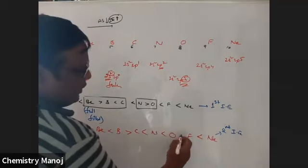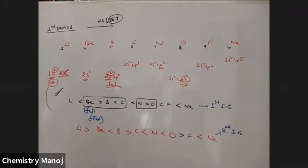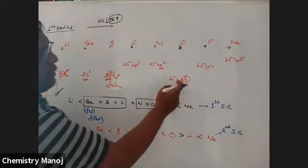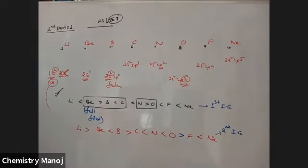Correction: oxygen greater than fluorine for second IP because after removing one electron, oxygen has the half-filled 2p³ configuration which is more stable, so its second ionization energy is greater than fluorine.